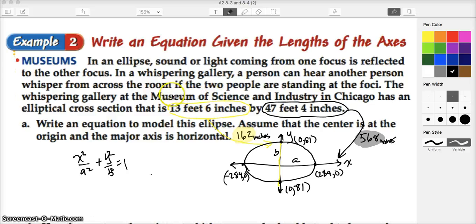We're talking about this cool museum where if you sit at particular points in the museum, the foci of an ellipse, it's kind of an elliptical room, we recognize that you can communicate, whisper from one person to another at the focal regions. What we're given is the cross section of this room is going to be 13 feet 6 inches by 47 feet 4 inches. Now, we're supposed to write an equation and assume that the major axis is horizontal. That tells me the longest side or the longest cross section will be on the horizontal axis.